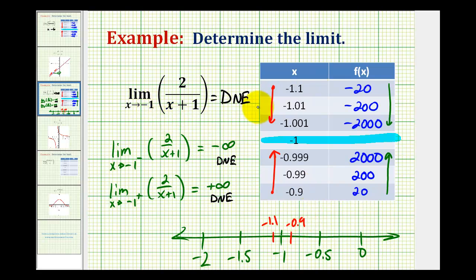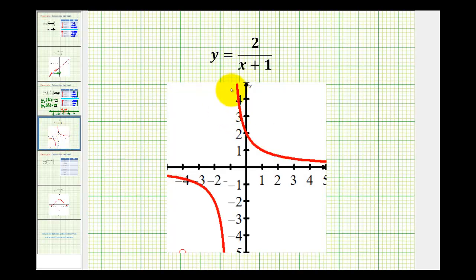And just to emphasize this result, let's take a look at the graph. So, as we approach negative 1 on the function, we're approaching this vertical line from the left and right. So, as we approach negative 1 from the right side, you can see the function increases without bound, so it's approaching positive infinity.